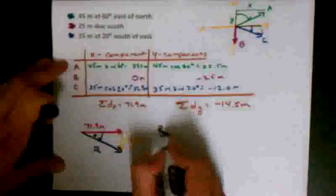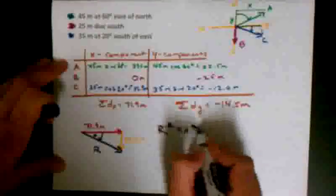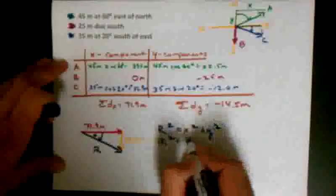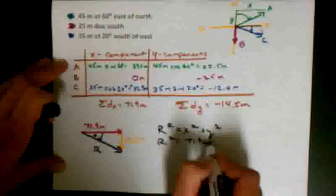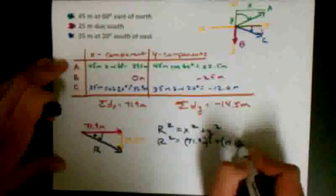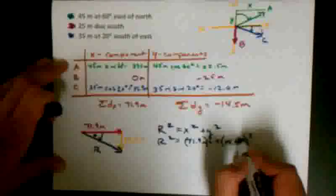To find the magnitude of the resultant, let's use the Pythagorean theorem. So we're going to write r squared equals x squared plus y squared, and r turns out to be 73.3 meters.